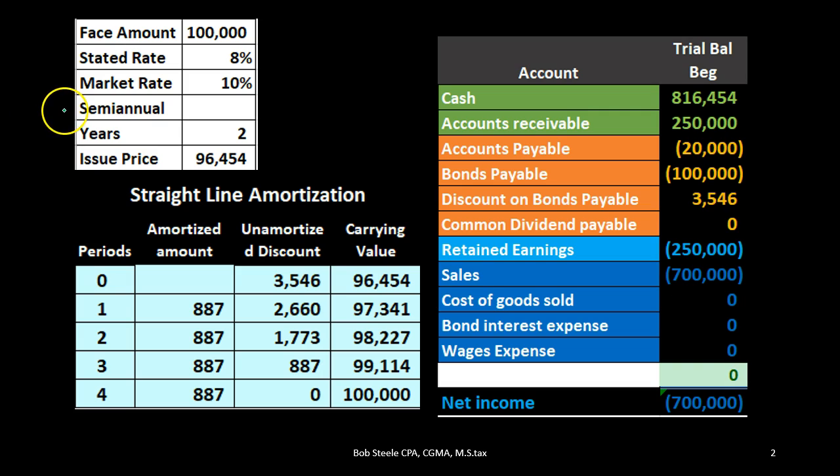We're going to have semi-annual payments, and it's a two-year bond, and therefore there are four time periods: two years, paid every two times a year, and therefore four time periods.